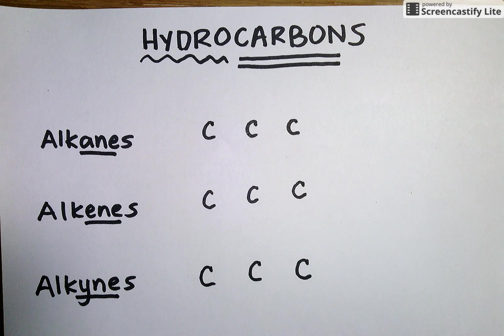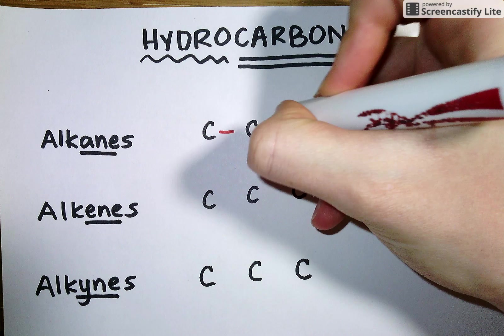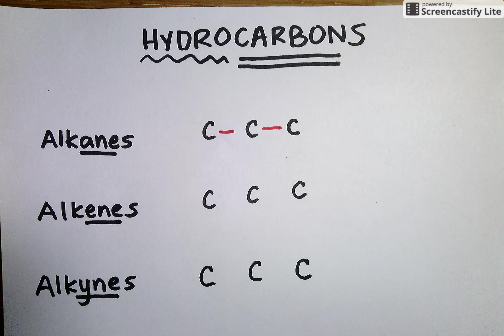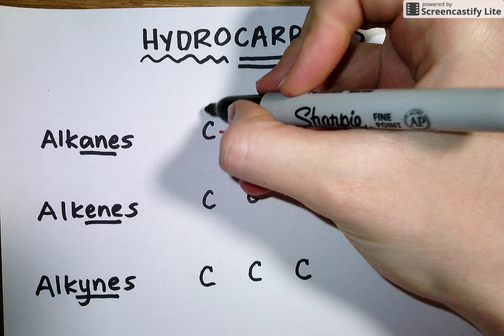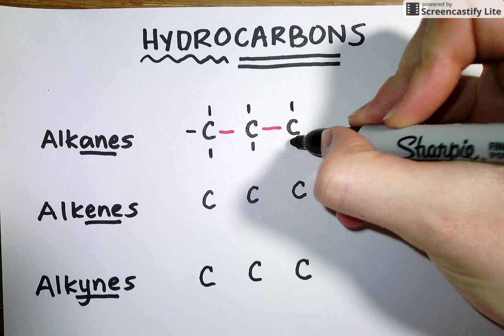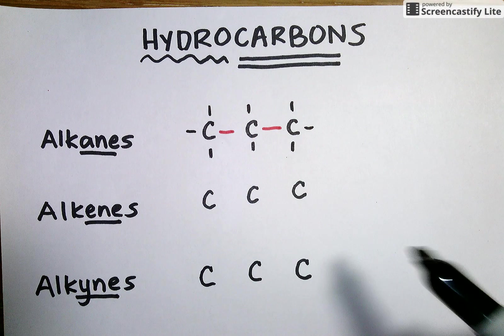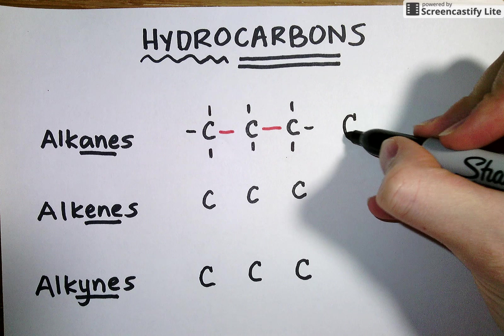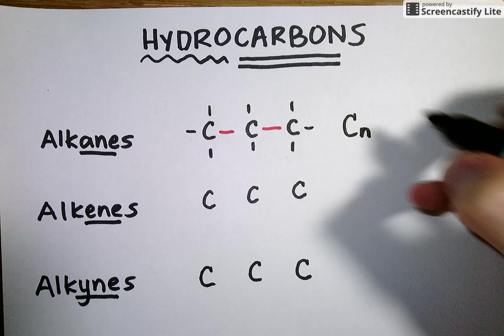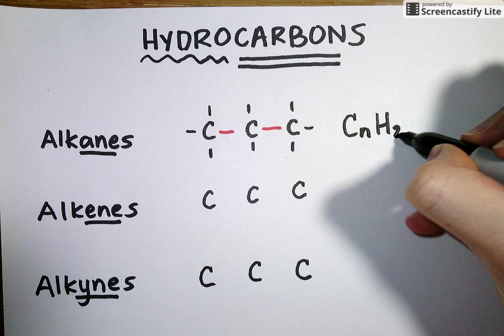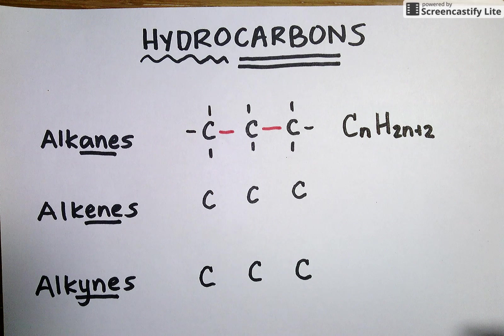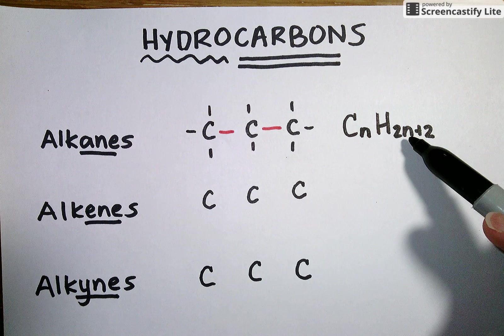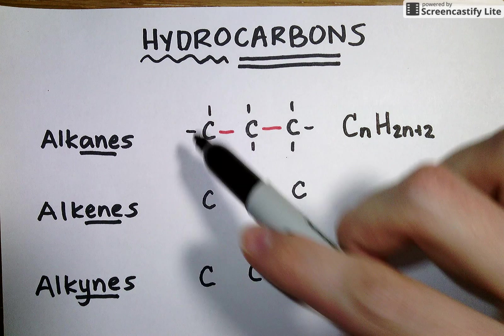Alkanes are defined by having exclusively single bonds between their carbon atoms. So when we fill in the missing hydrogen so that each carbon has four bonds, we find that it is completely full of hydrogen surrounding our carbon atoms in a ratio such that for every carbon there are 2n plus 2 hydrogens. So in this example here I've got three carbons and I have 2 times 3, 6, plus 2, 8 hydrogens.